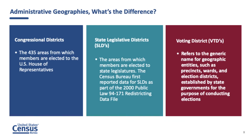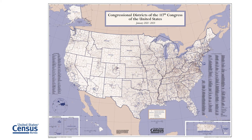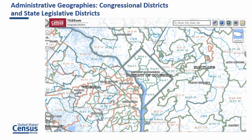When talking about redistricting, it's important that these three administrative geographies are understood. Geography is always a central topic when talking about Census Bureau data because you must define the container for your data. Congressional districts are the 435 areas from which members are elected to the U.S. House of Representatives; the number of representatives per state is updated after each decennial census. State legislative districts are the areas from which members are elected to the upper and lower chambers of the state legislatures, updated after each decennial census. The Census Bureau first reported data for state legislative districts as part of the 2000 PL 94-171 redistricting data file.